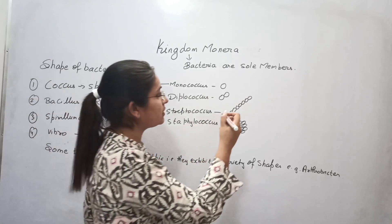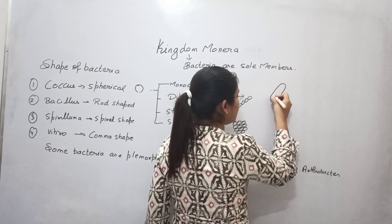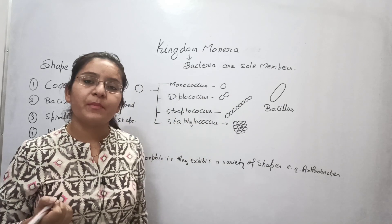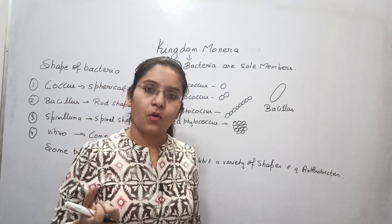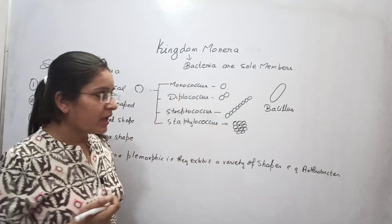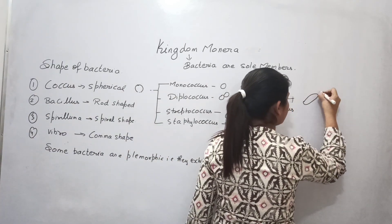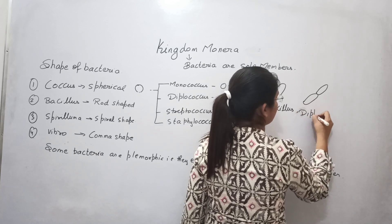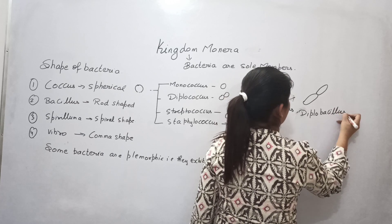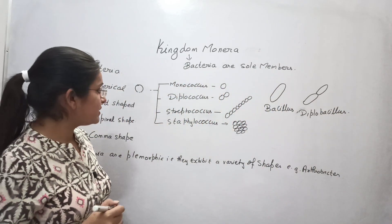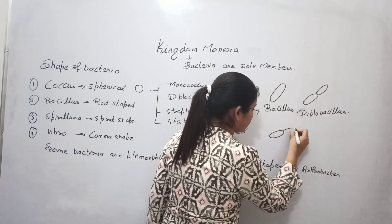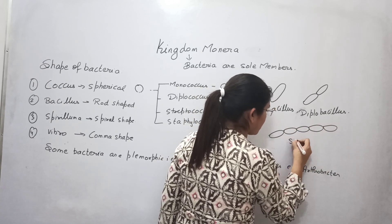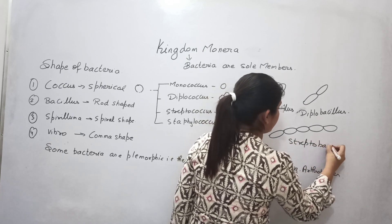The second shape is bacillus. Bacillus means a rod shape — this is a rod-shaped bacterium. In plural, we call them bacilli, similarly for coccus we say cocci in plural. There is also diplobacillus and then streptobacillus — a chain of bacillus or rod-shaped bacteria is called streptobacillus.